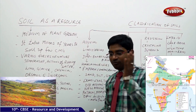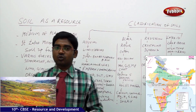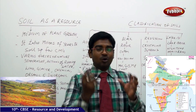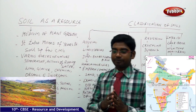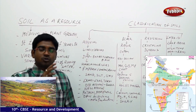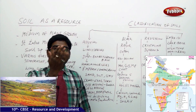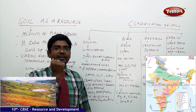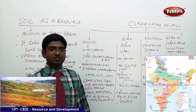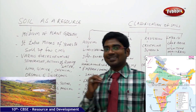Soil as a resource. We have seen land as a resource, discussed the different patterns, how land has been categorized, and later analyzed how to stop land degradation — why it is getting degraded and what are the methods to stop it. Now moving on to understand soil as a resource.